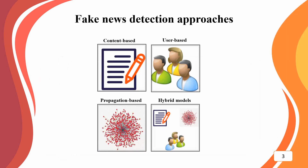Fake news detection approaches can be divided into four categories: content-based models, user-based models, propagation-based models, and hybrid models. Content-based models use the content of a news article including the title and body, in addition to images and videos, to analyze the veracity of a news article. User-based models use features related to the profiles of users involved in sharing the news. Propagation-based models use information related to the spreading process of a news article to predict its veracity. Hybrid models use the benefits of all three models simultaneously.